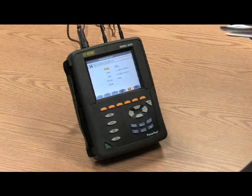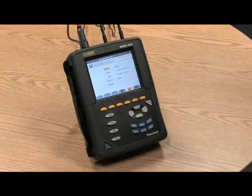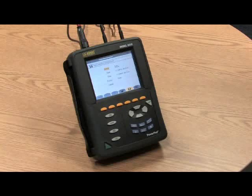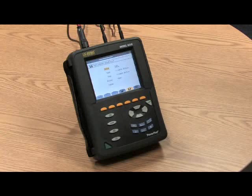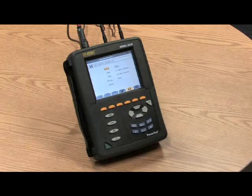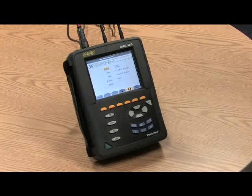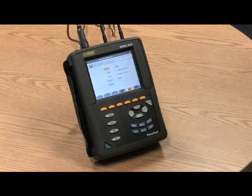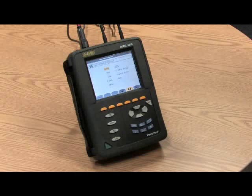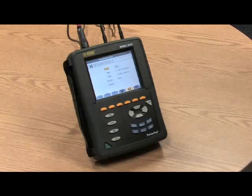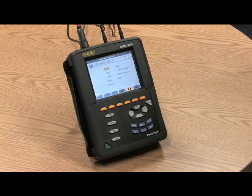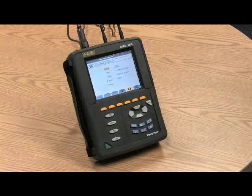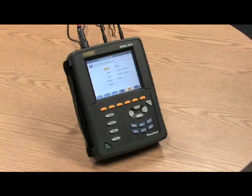Some of the key specifications on the 8335, it'll measure true RMS voltage and true RMS current. It'll measure up to 1,000 volts, phase to phase, or phase to neutral. The current measurement is dependent upon the probe that's connected to it, and we'll talk about the probes in a little bit. And it can be for as low as a few hundred milliamps to as high as 6,500 amps.